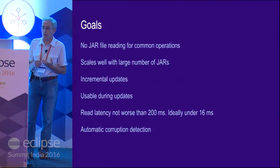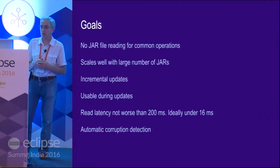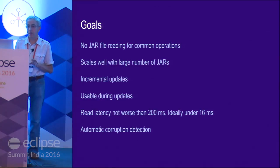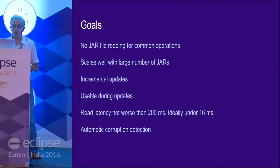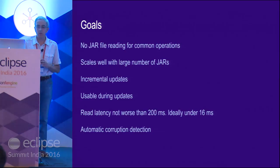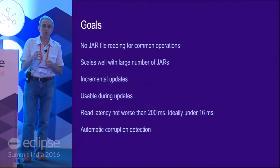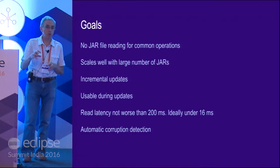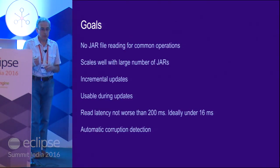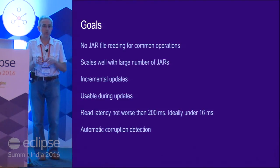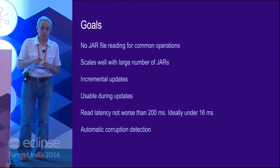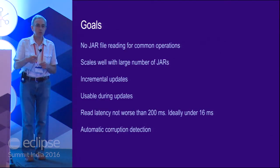What are our requirements for this new index? We want to completely eliminate jar file reading in a synchronous way for common operations. We want to scale well with a large number of jars — that's our primary problem at Google. We want the index to be updated incrementally, so when something small changes, we don't want to rebuild the whole index. We want the time taken for an update to be proportional to the size of the change. The index also has to be usable during updates.